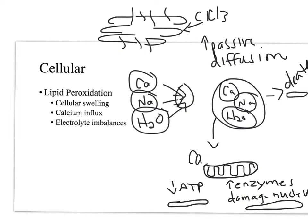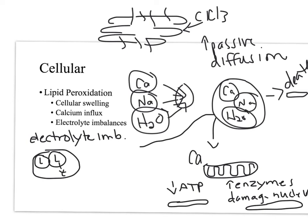A third thing that can happen is that we'll go back to this cell that's full of calcium, sodium, and water, and we'll talk about electrolyte imbalance. With electrolyte imbalance, you have this cell, and inside the cell you have lysosomes. These lysosomes are affected by electrolytes, and when there's an electrolyte imbalance, they start to release lysosomal enzymes.